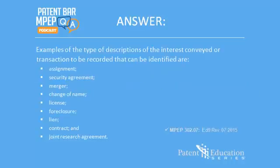As shown in Chapter 300, examples of the type of descriptions of the interest conveyed or transaction to be recorded that can be identified are: Assignment, Security Agreement, Merger, Change of Name, License, Foreclosure, Lien, Contract, and Joint Research Agreement.